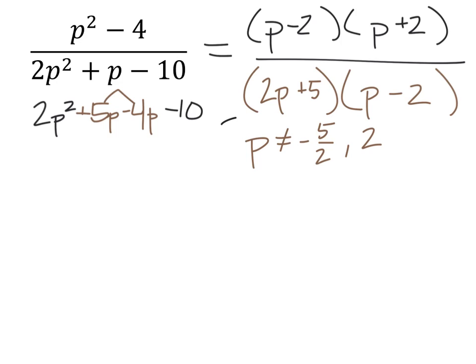Now, that of itself is a way to write the answer, where we have p, and it's a set of numbers where p is not equal to negative five halves or 2.